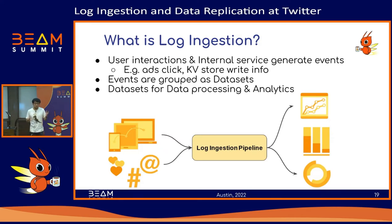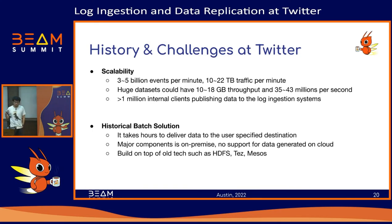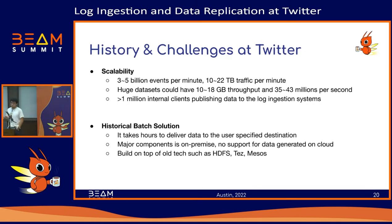At Twitter, we group data into datasets — for instance, the data collected from a click is a dataset. To build this pipeline, we have to handle Twitter's scale. We have about three to five billion events per minute, and 10 to 12 terabytes of traffic per minute. This traffic is not evenly distributed — some large datasets have up to 10 to 18 gigabytes throughput per second and 35 to 43 million events per minute. We have more than one million internal clients — producers — sending data to our log ingestion system.